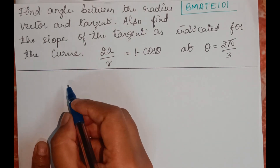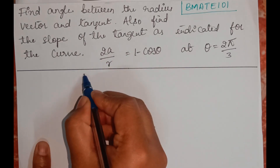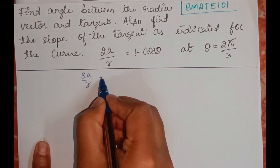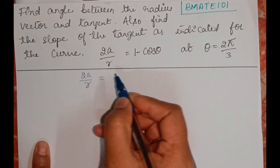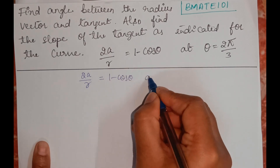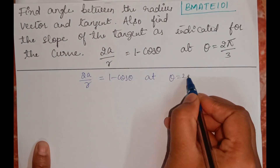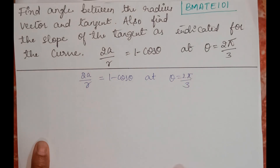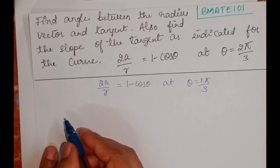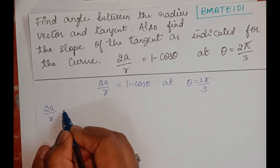So I will get started. Here I have 2a/r = 1 - cosθ at θ = 2π/3. As we did earlier, I will work through this again.